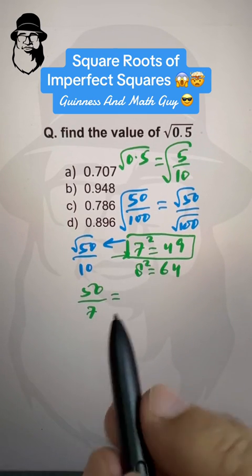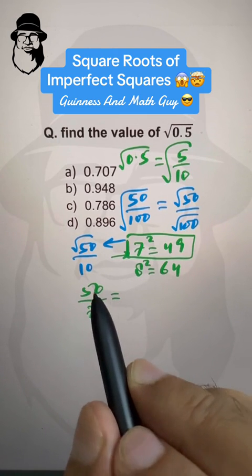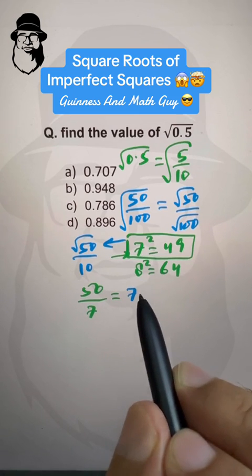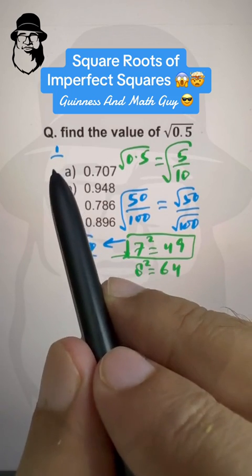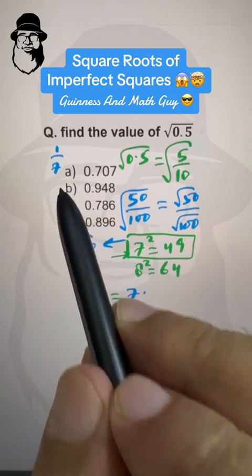And, divided by 7. 50 divided by 7 is, 7 times 7 is 49, then we have 1 over 7, 1 remainder.